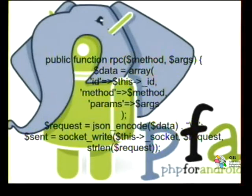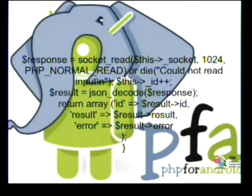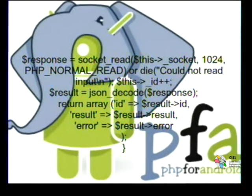We're implementing an RPC function with method and arguments. We pass an array with the ID, method, and parameters. We JSON-encode that data to send it. We create a socket and send the JSON content, verifying the request size. The response involves reading from that socket while waiting for the result. If it can allocate 4 bytes it succeeds; otherwise it throws an error saying it couldn't read input. Then it receives the data, increments the ID, decodes the JSON, and creates a return array with the result.